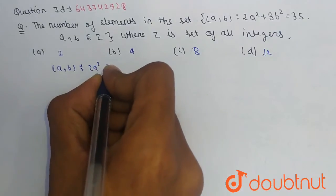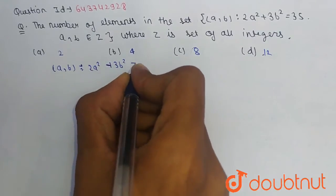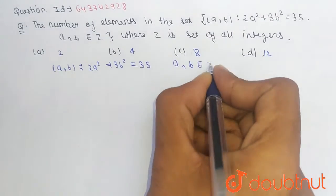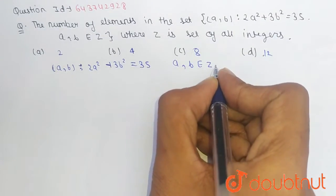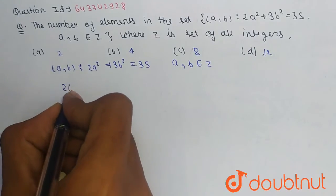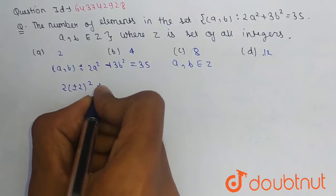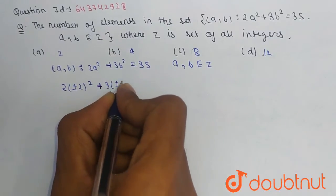2a² + 3b² = 35, where (a, b) is an element of Z, where Z means integers. So what we have to simply do: 2(±2)² + 3(±3)² = 35.